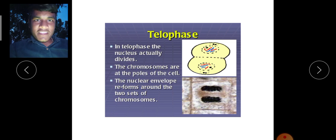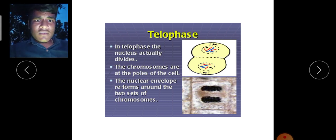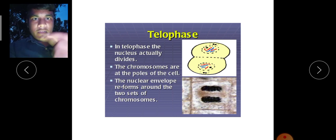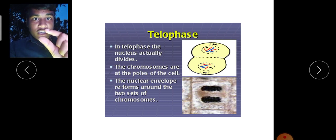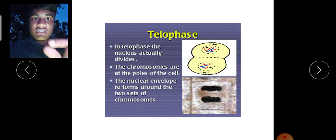The last phase is telophase. Up to anaphase, the chromosomes have been divided. In telophase, the nucleus actually divides. We are talking about karyokinesis — the division of the nucleus. In telophase, the divided chromosomes move towards each opposite pole, and the nuclear envelope and nucleolus re-form around the set of chromosomes at each pole. Division of the nucleus is known as karyokinesis.